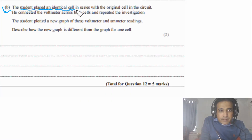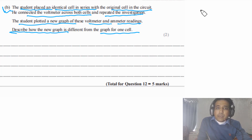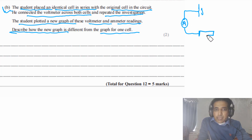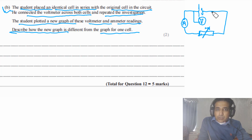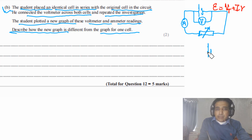Part B says: the student placed an identical cell in series with the original cell. He connected the voltmeter across both cells and repeated the investigation, plotting a new graph of voltmeter and ammeter readings. Describe how the new graph differs from the graph for one cell. With one cell we have EMF = V_T + I·r. With two identical cells in series, EMF is doubled, so the entire equation doubles.